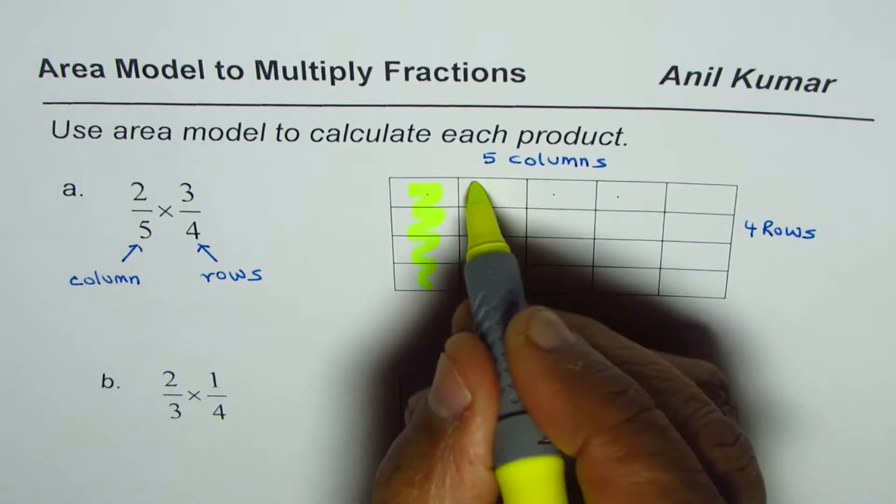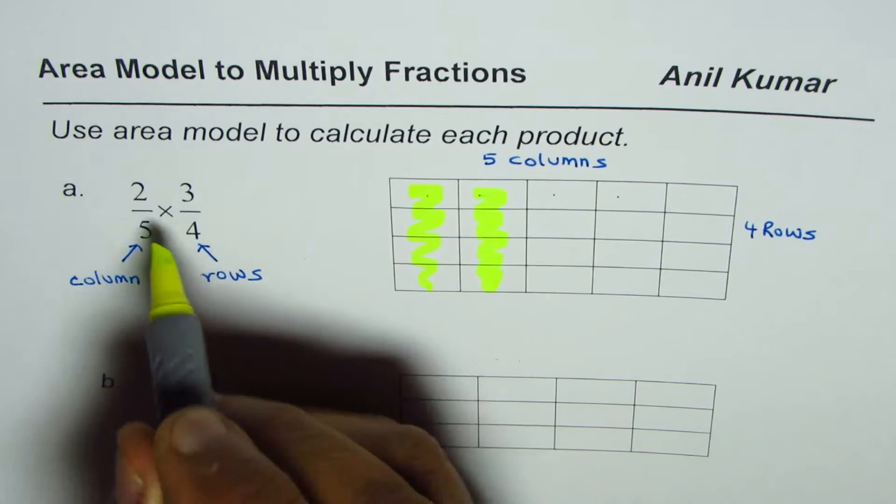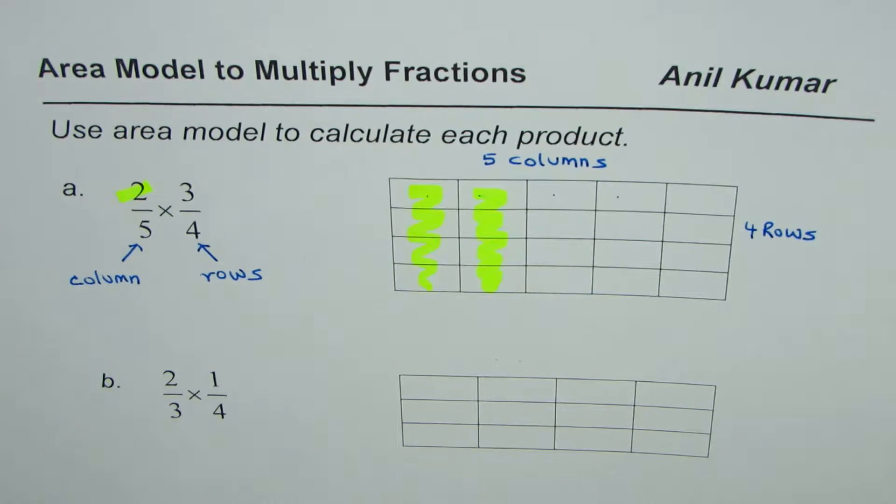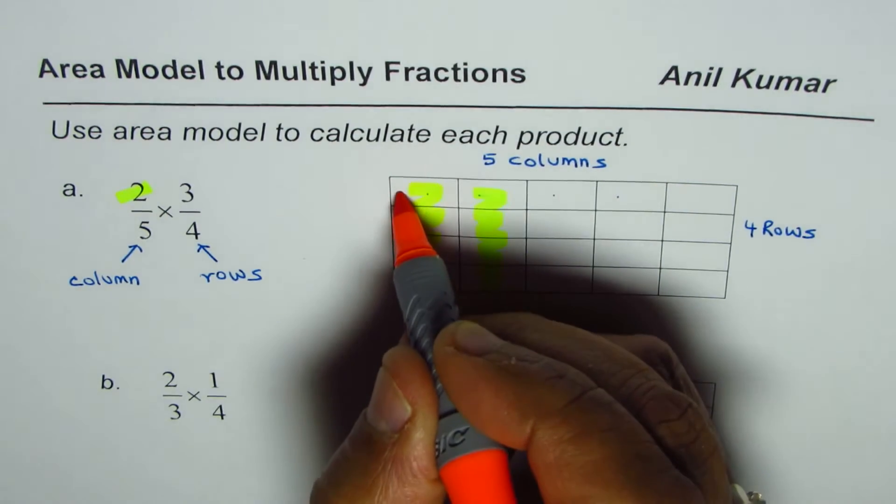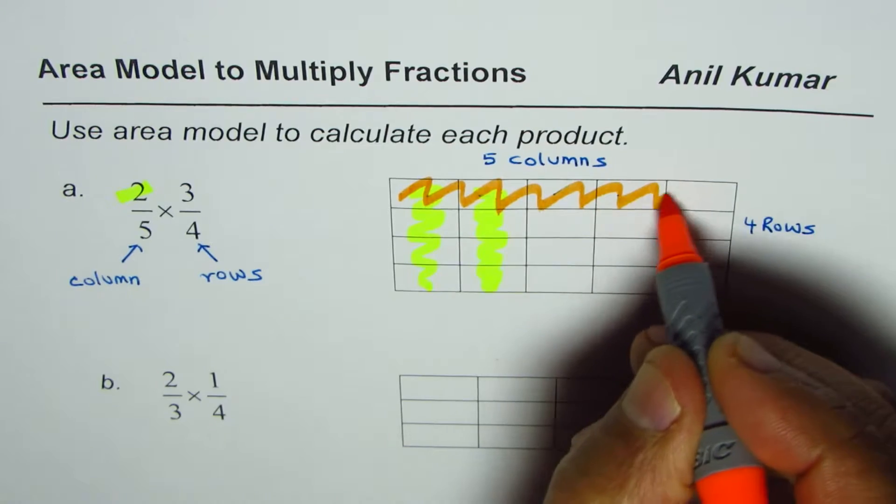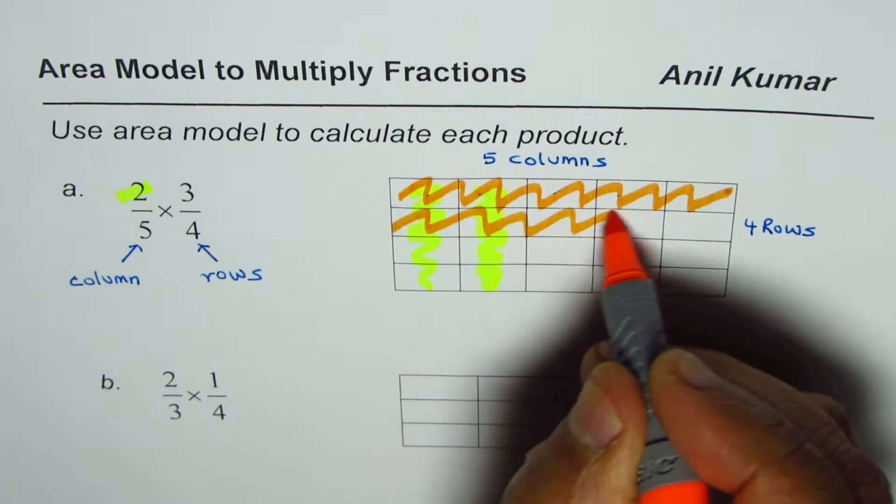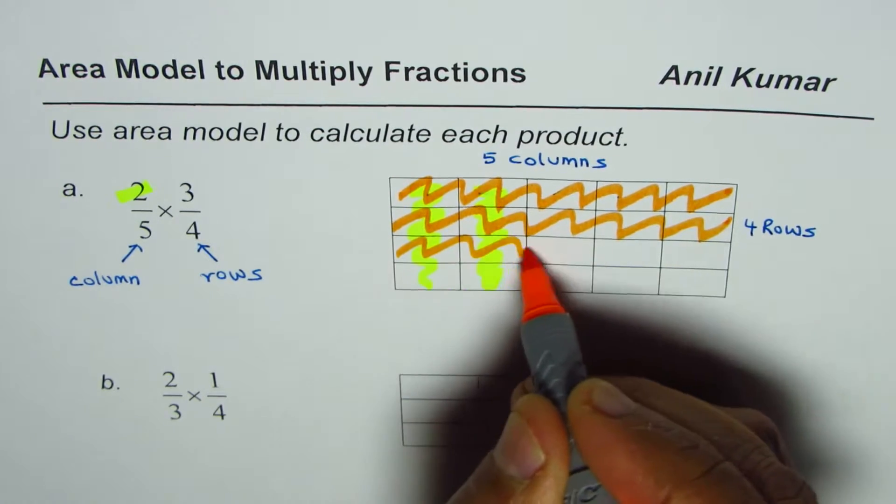Now to find the product really means that you select two out of five columns. So we have five columns, select two. This is one, this is two. So you have selected two out of five and I've selected with this yellow highlighter. And now with another color we'll select three rows.